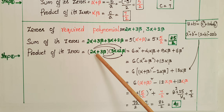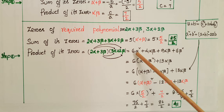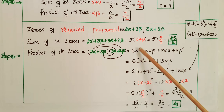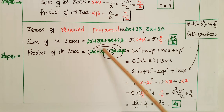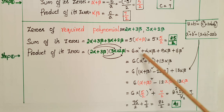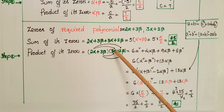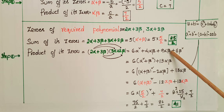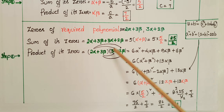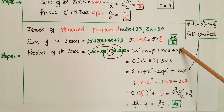Product of the zeros equals (2α+3β)(3α+2β). Expanding: 2α×3α = 6α², 2α×2β = 4αβ, 3β×3α = 9αβ, and 3β×2β = 6β². So the product equals 6α² + 4αβ + 9αβ + 6β².